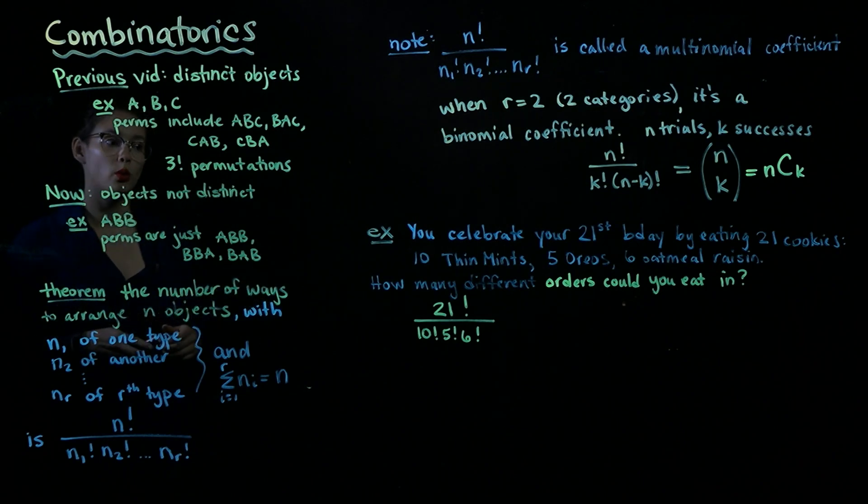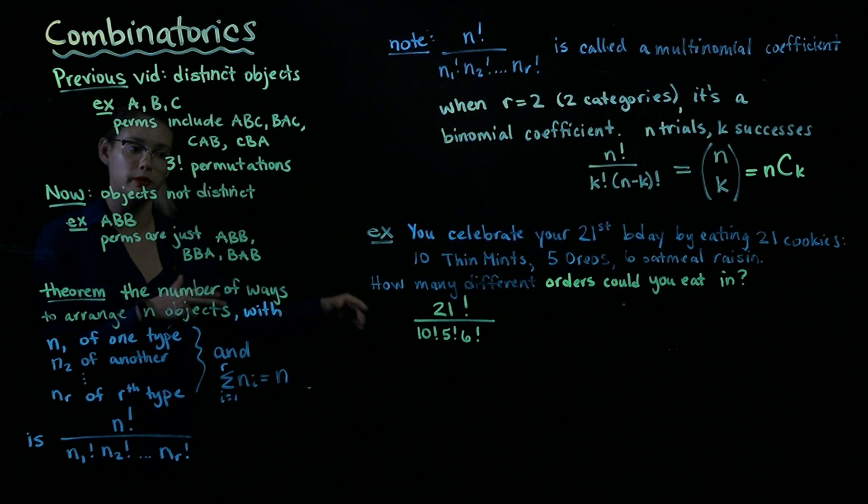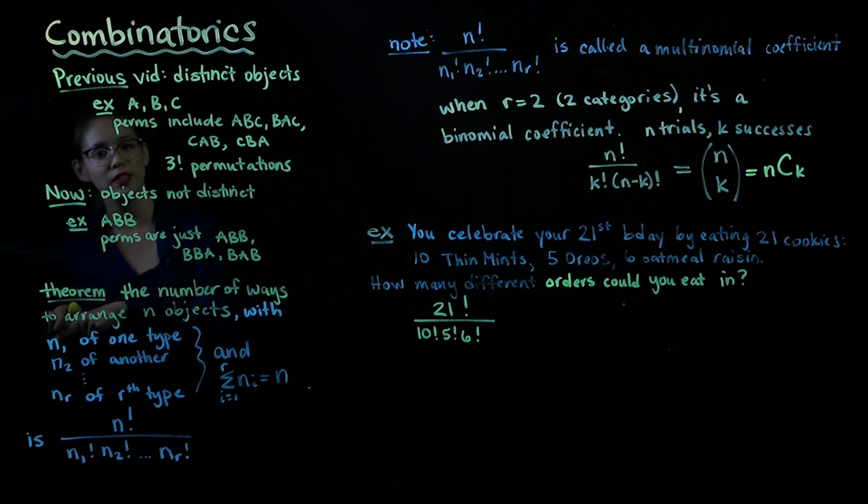So now you're wondering, how many different orders could I eat these cookies in? Like I could eat all of the thin mints first, and then all the Oreos, and then all the oatmeal raisin, or I could eat one thin mint, one Oreo, one oatmeal raisin, all those different orders.